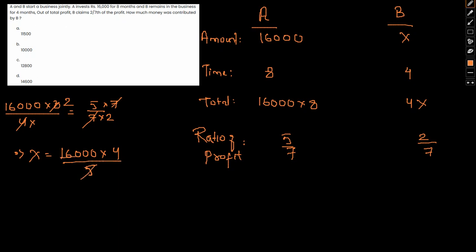This is cancelled: 5, 3, 2, 2, 0. X would be 12,800.